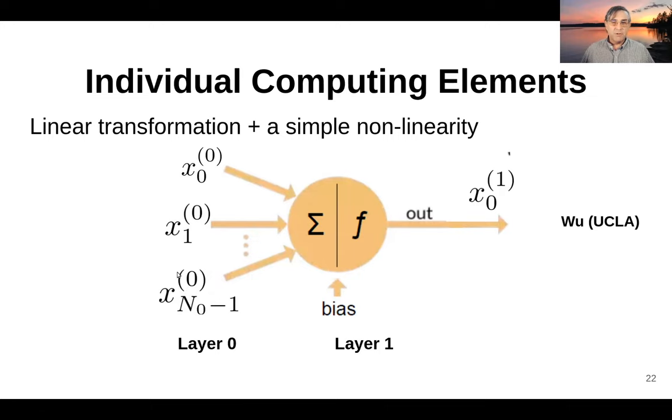N_0 refers to how many inputs we have. The bias term here is that offset term we had, a w_1 beforehand. The first half of our neuron does exactly what we talked about before, where we have some sort of weighted sum of all of the inputs. But what we're adding is some non-linearity on top of this. As far as notation goes, this zero here refers to layer zero, which is our inputs, and layer one I'm indexing here with a one.